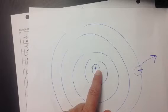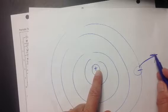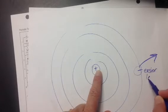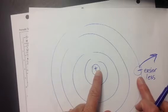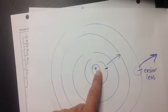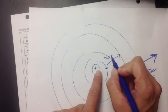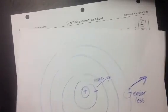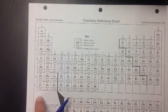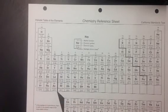So the ionization energy, the energy required to remove that electron, is going to be a lot easier or less energy if it's further away from the nucleus than if that electron is closer to the nucleus. It's going to take more energy here. So as we go down the periodic table, our ionization energy is going to decrease because the electrons are further away from the nucleus.